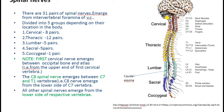Depending upon the location in the body, spinal nerves are divided into five groups: cervical, thoracic, lumbar, sacral, and coccygeal. The spinal nerves present in the cervical region are known as cervical spinal nerves, and those in the thoracic region are known as thoracic spinal nerves.